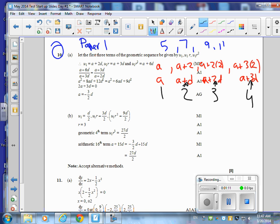So what I have here is the third term is A plus 2D, the fourth term is A plus 3D, the seventh term is A plus 6D.